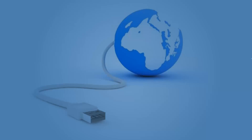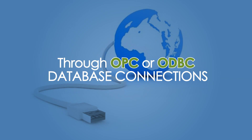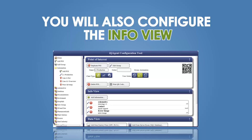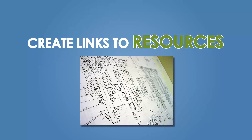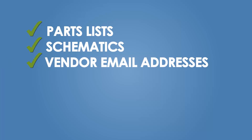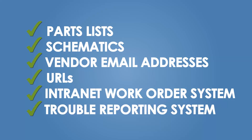Data views are links to live process data from your HMI, SCADA, DCS, or PLC, through OPC or ODBC database connections. You will also configure the info view, allowing you to create links to resources like parts lists or schematics, vendor email addresses, and URLs for your document server, intranet work order system, or trouble reporting system.